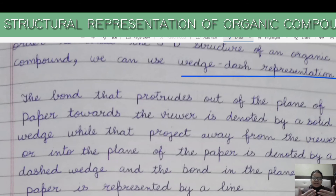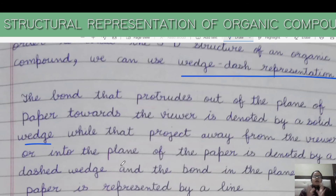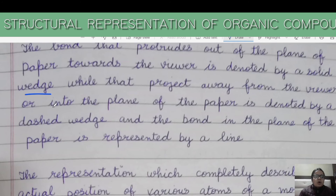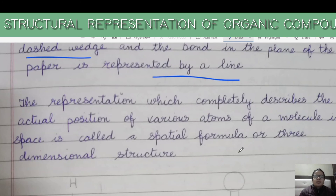The bond that protrudes out of the plane of the paper towards the viewer is denoted by a solid wedge. The bond that projects away from the viewer or into the plane of the paper is denoted by a dash wedge. I will make a separate short video showing this with a ball-and-stick model. The bond in the plane of the paper is represented by a simple line. The representation that completely describes the actual position of atoms in space is called a spatial formula.